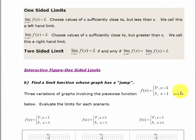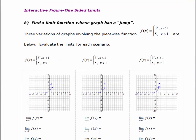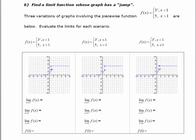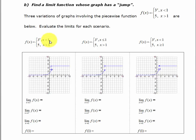In the first scenario on the last page, we looked at the graph of a function that had a hole in it. Here we're going to look at a function that has a jump. This generally happens when you have piecewise functions. If you look up top at this piecewise function, we're going to do 3 variations of this, basically changing whether you have a less than or equal to or greater than or equal to. This is a piecewise function.